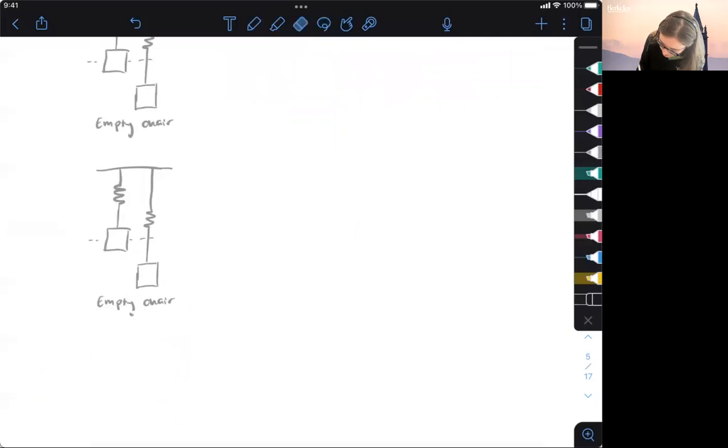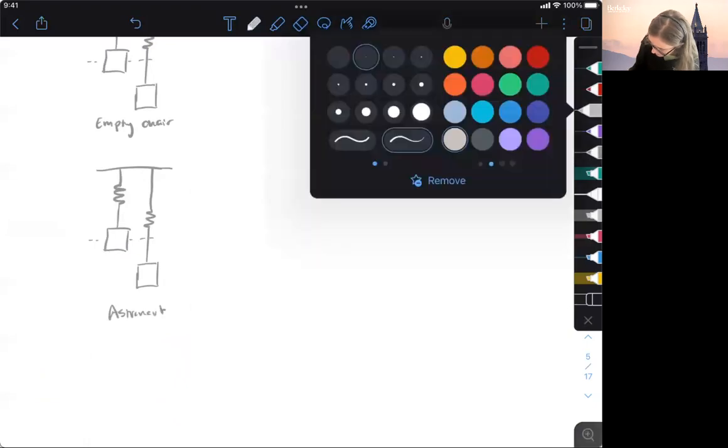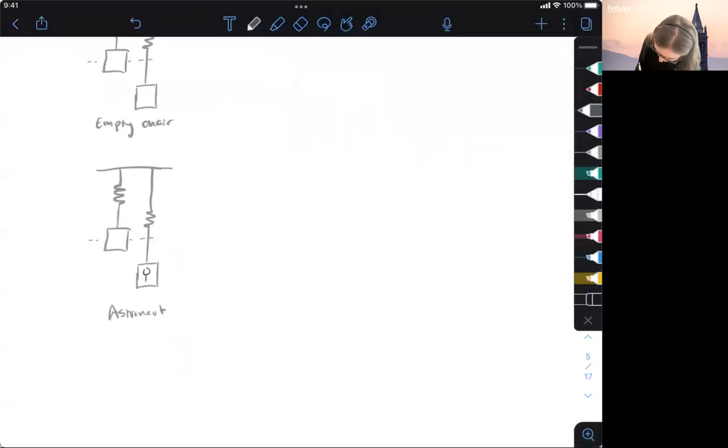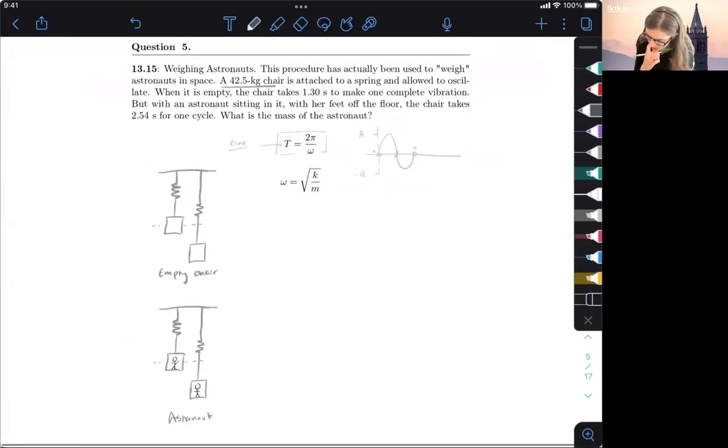And then non-empty chair. This is the astronaut person who's in the chair, this is a questionable drawing. So by comparing these two, we can look at the difference and then figure out the mass of the second object.